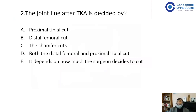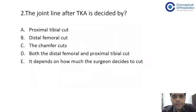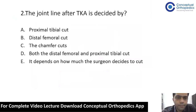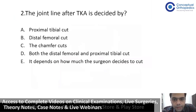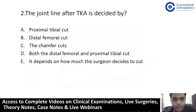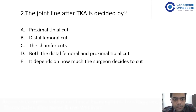Let's come to question number two. Your clock starts now. Joint line after TKR is decided by: A — proximal tibial cut, B — distal femoral cut, C — chamfer cuts, D — both the distal femoral and proximal tibial cut, and E — it depends on how much the surgeon decides to cut. I have ruled out option C — chamfer cuts is not the answer. I would like to rule out option E as well.